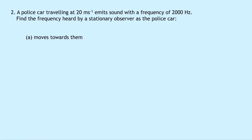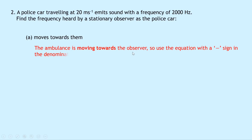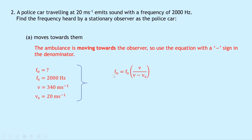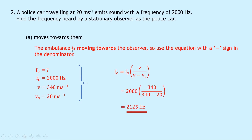Question 2 says that a police car travelling at 20 metres per second emits sound with a frequency of 2000 hertz. Part A: find the frequency heard by a stationary observer as the police car moves towards them. Since it's moving towards the observer, we use the equation with a negative sign in the denominator. FO is unknown, FS is 2000 Hz, V is 340 m/s, VS is 20 m/s. So FO equals FS times V over (V minus VS), giving 2000 times 340 over (340 minus 20), which equals 2125 hertz. A quick check confirms this is larger than the source frequency, as expected.